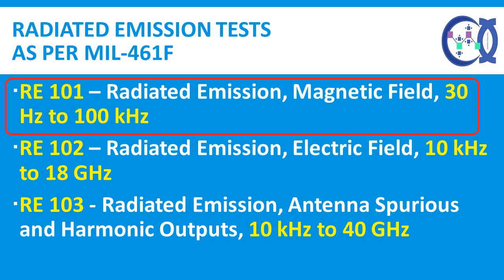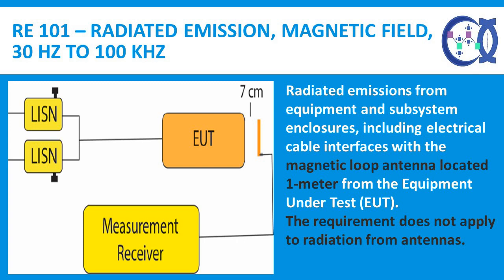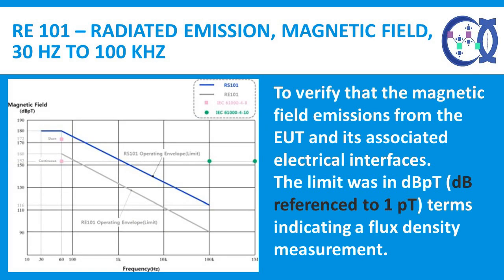RE-101 Radiated Emissions, Magnetic Field, 30 Hz to 100 kHz. This requirement is applicable from 30 Hz to 100 kHz for radiated emissions from equipment and subsystem enclosures, including electrical cable interfaces, with the magnetic loop antenna located 1 m from the equipment under test (EUT). The requirement does not apply to radiation from antennas. The limit is expressed in dBpT — decibels referenced to 1 picotesla — indicating a flux density measurement.